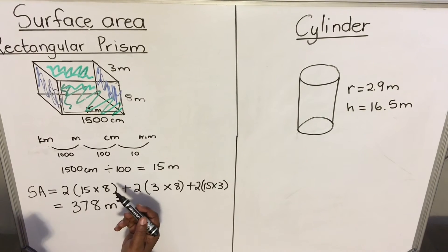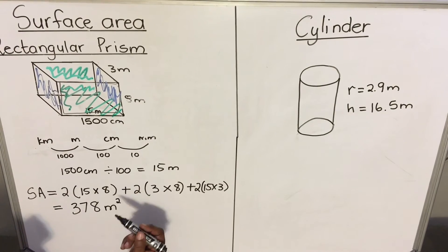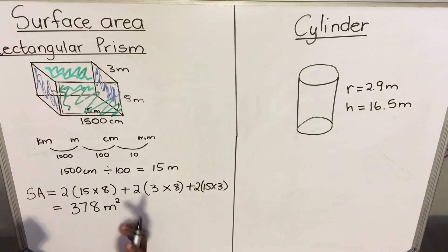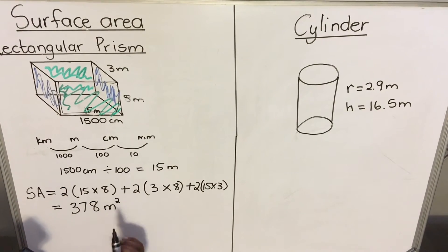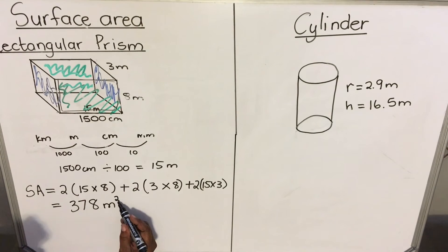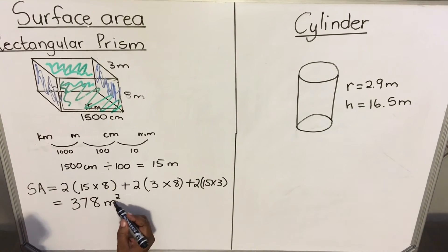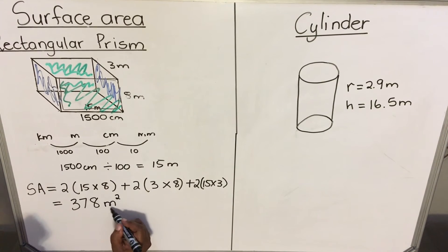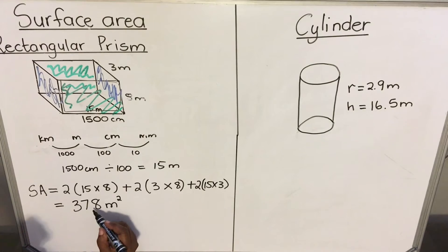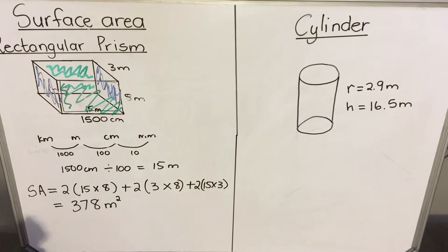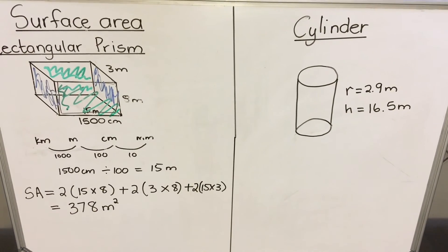The surface area comes out to 378 meters squared. You had meters as your unit, and when you calculate area it is squared — so the unit is meters squared. Please don't square the number, square the unit. Write the squared symbol on the unit, not on the number.